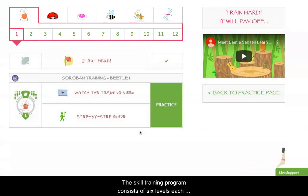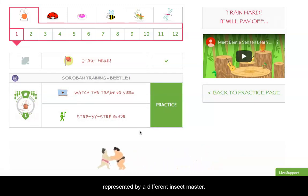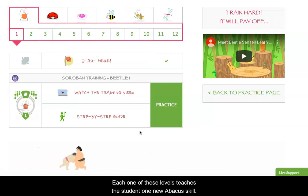The skill training program consists of six levels, each represented by a different insect master, and each one of these levels teaches the student one new abacus skill. By the end of skill training, our students will be able to master all addition and subtraction problems. It typically takes a student somewhere between three to four months to complete the entire skill training program. Once skill training is complete, users will move on to our more advanced level training where we have ten levels of advanced Soroban training, including multiplication, division, decimals, and negative numbers.